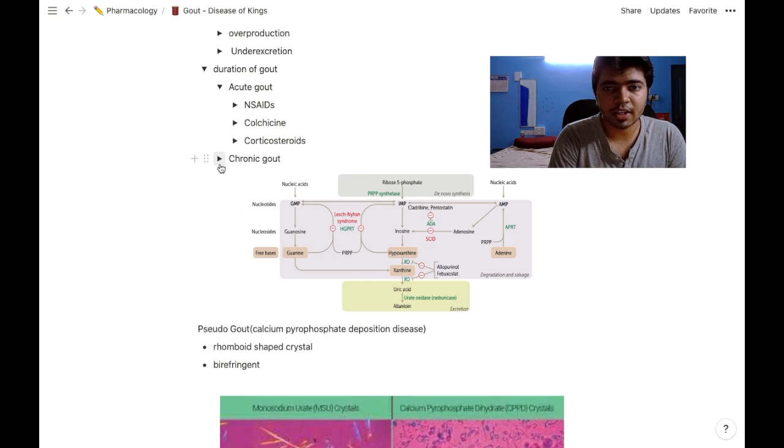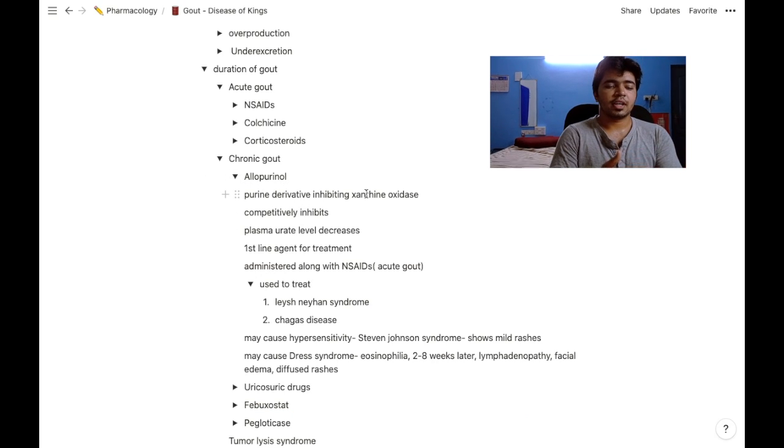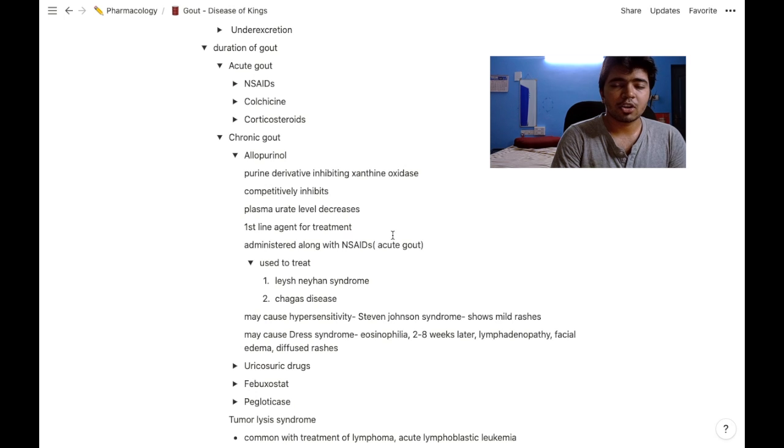In chronic gout, there are four main drugs: allopurinol, uricosuric drugs, febuxostat, and pegloticase. Allopurinol is a purine-derived xanthine oxidase inhibitor. By competitively inhibiting xanthine oxidase, it decreases uric acid levels in the plasma.